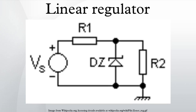Linear regulators exist in two basic forms: shunt regulators and series regulators. Most linear regulators have a maximum rated output current, generally limited by either power dissipation capability or by the current carrying capability of the output transistor. The shunt regulator works by providing a path from the supply voltage to ground through a variable resistance. The current through the shunt regulator is diverted away from the load and flows uselessly to ground, making this form usually less efficient than the series regulator.